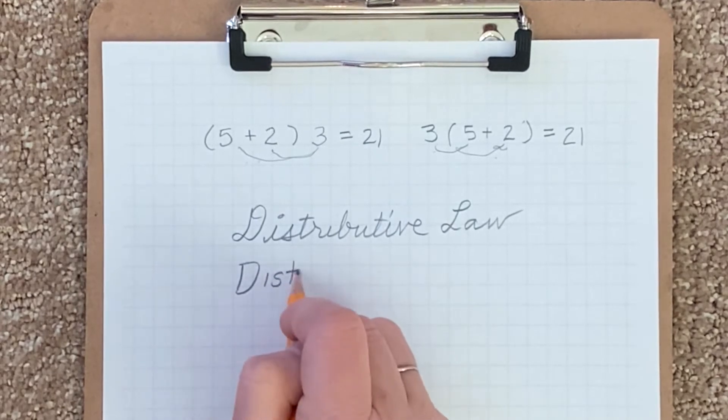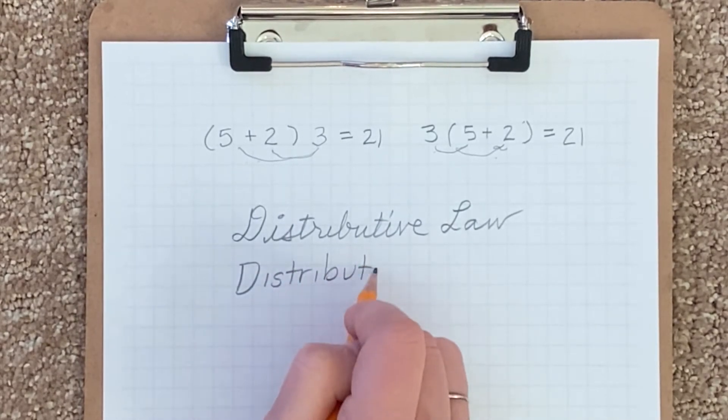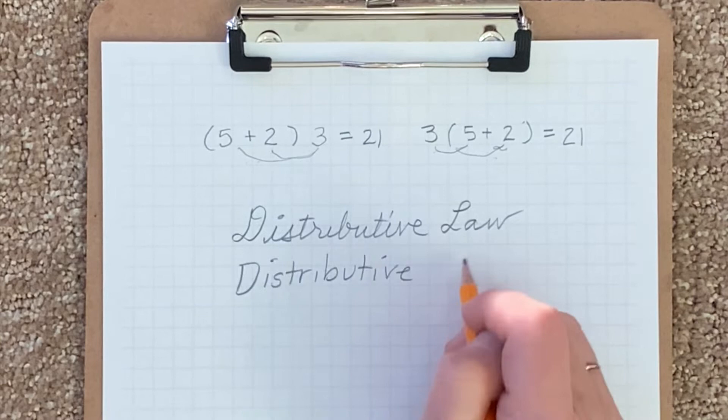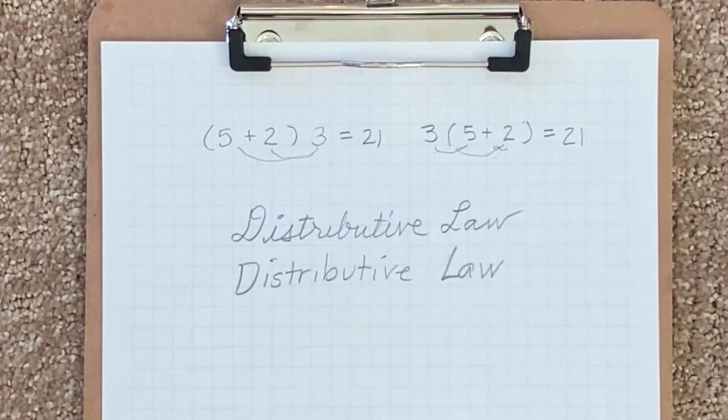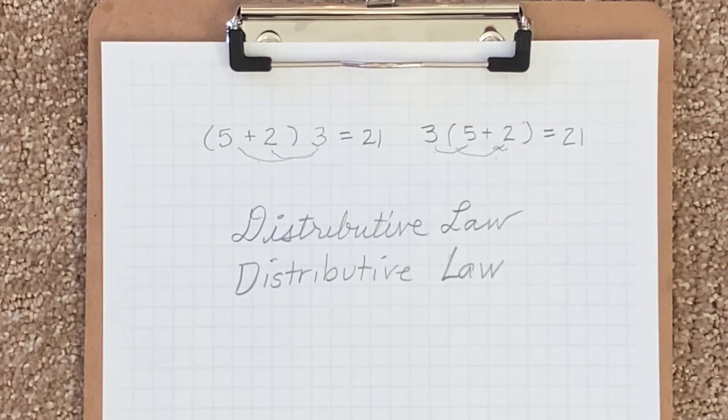And therefore, we call it distributive law. And now you've learned commutative law and distributive law. And distributive law, you will also see in further math lessons. So it's really important to learn now because it'll pop up again and again.